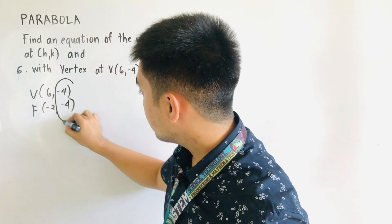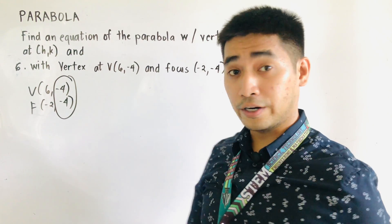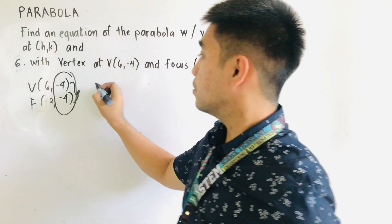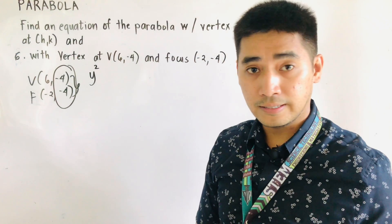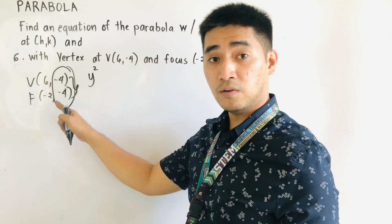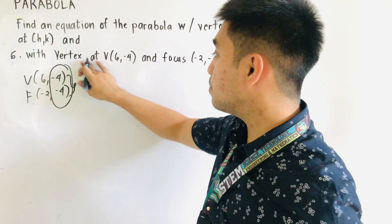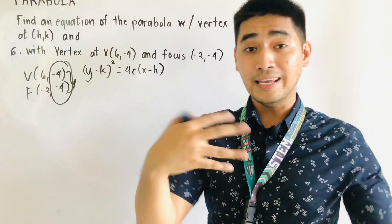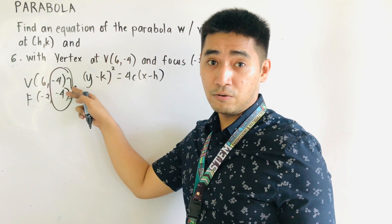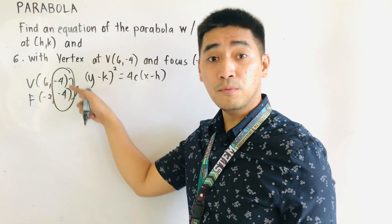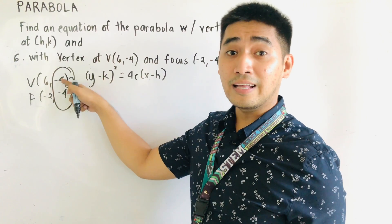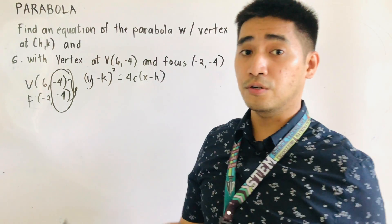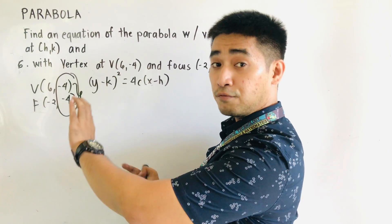We can see here that we will not be using the y-coordinate — both are negative 4. So what we will do now is that this is y squared. The one that is not involved should be y squared. Therefore, our equation will be: y minus k, quantity squared, is equal to 4c times x minus h. If they have the same value, that is the one being squared. So we have y squared as the equation, but we do not know yet if it is opening to the left or to the right.